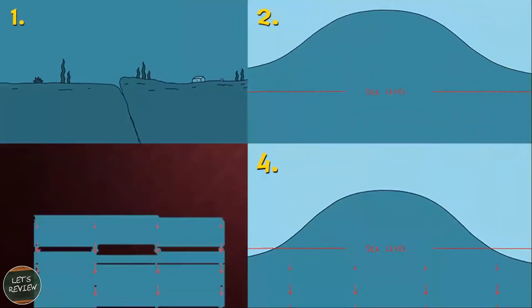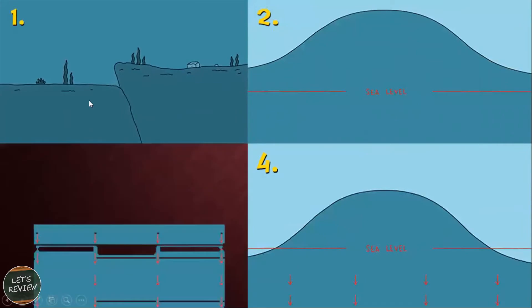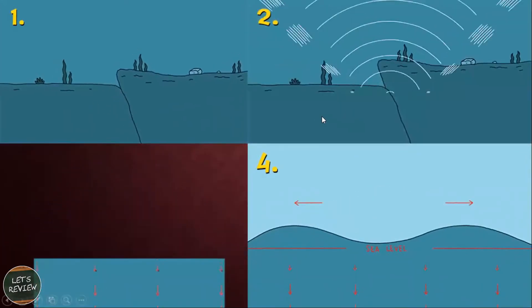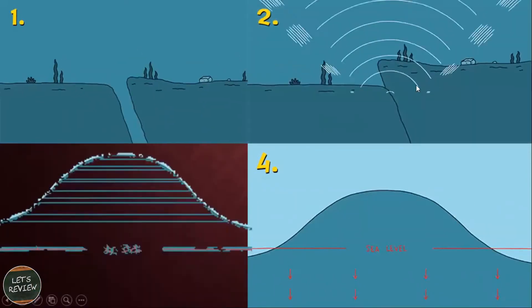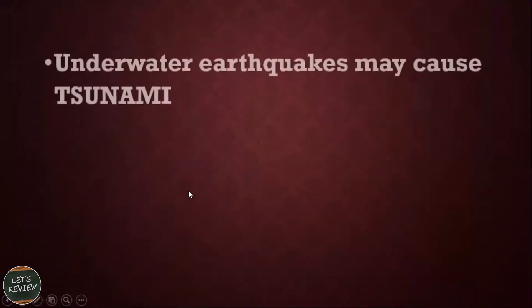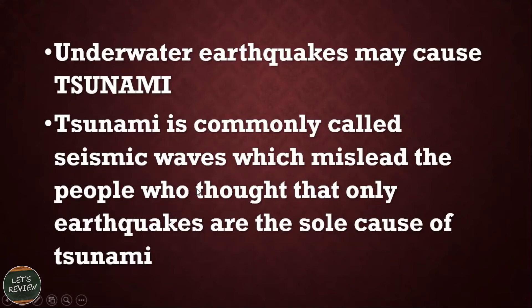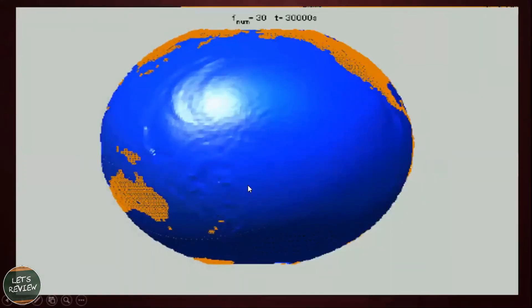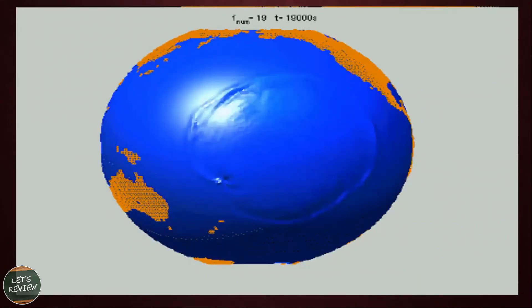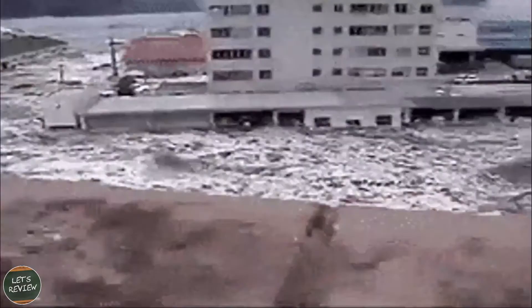Let's take a look at how water rises during an underwater earthquake. As the ground moves, it makes the sea level rise, then moves the water outward, creating a huge wave moving towards the land. The underwater earthquake may cause a tsunami. Tsunami is commonly called seismic waves, which has misled people into thinking that only earthquakes are the sole cause of tsunami. This animation shows the reaction of water as the earthquake strikes the sea floor, and what happens when the water rises much higher than usual.